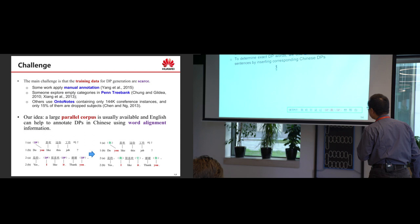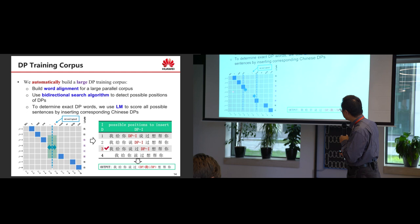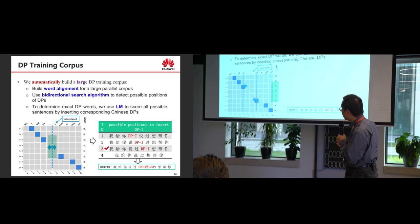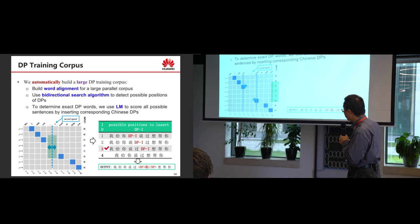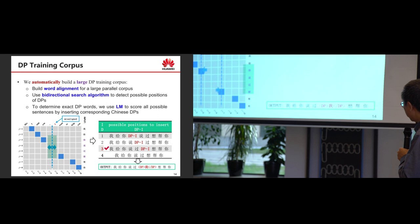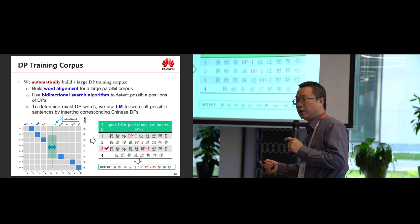This is the word alignment example. This is the English sentence and this is the Chinese sentence. We can find that 'I' is not aligned. We then guess the position of the dropped pronoun from the alignment of neighboring words. We can see that 'want' is aligned to one Chinese word and 'you' is aligned to another Chinese word, so we guess the missing pronoun in the Chinese side should be between those words. We then use a language model to find the best position.